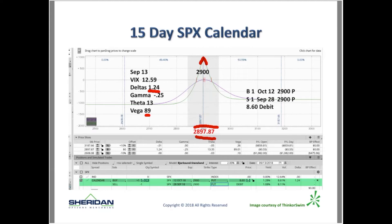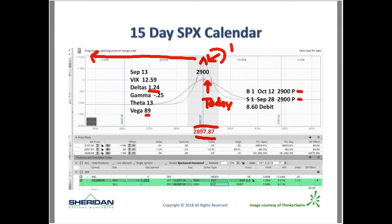In this example, I'm buying one October 12 2900 put and selling one September 28 2900 put. The way you make money on calendars — the reason the P&L is up at expiration — is that the green line is the expiration graph and the purple is the graph today. In 15 days, which is the expiration of your short option, your long option is 29 days from expiration and your short is 15 days. We label it off the short and we'll be out by then.